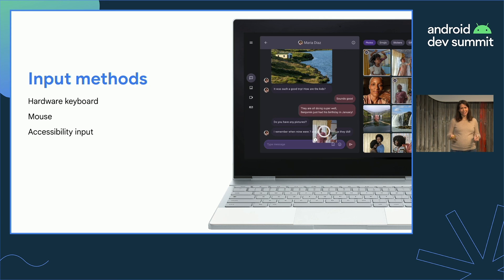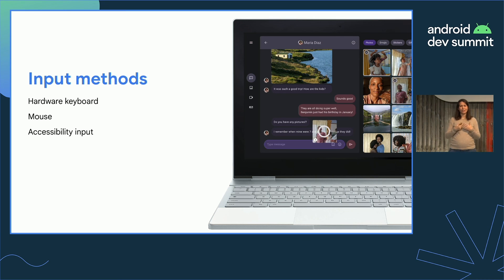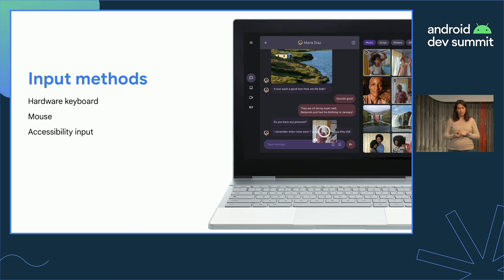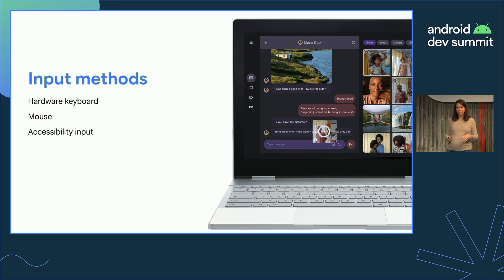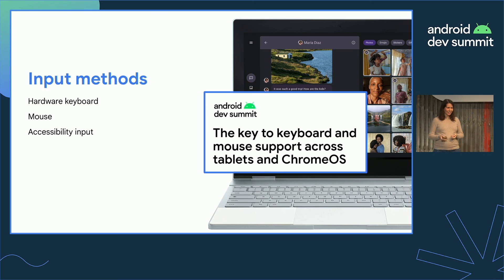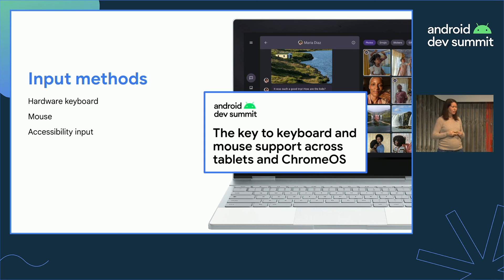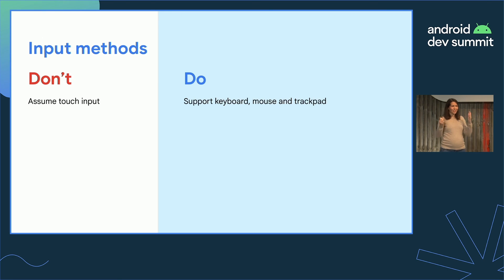Finally, don't assume all your users are using touch. We have a huge fleet of Chromebook devices that can run your app, and there will be many users using keyboard, mouse, or trackpad. Accessibility users may also be interacting with different accessibility devices. It's really important to support all of these inputs. We have a dedicated talk — 'The key to keyboard and mouse support across tablets and Chrome OS' — for apps that have these issues. Don't assume touch-only; support keyboard, mouse, and trackpad.